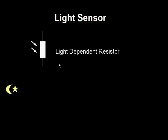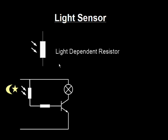Let us take a closer look at how a light-dependent resistor works. In dark conditions, resistance is high, so no current flows into the base of the transistor, and therefore your bulb will not light up.